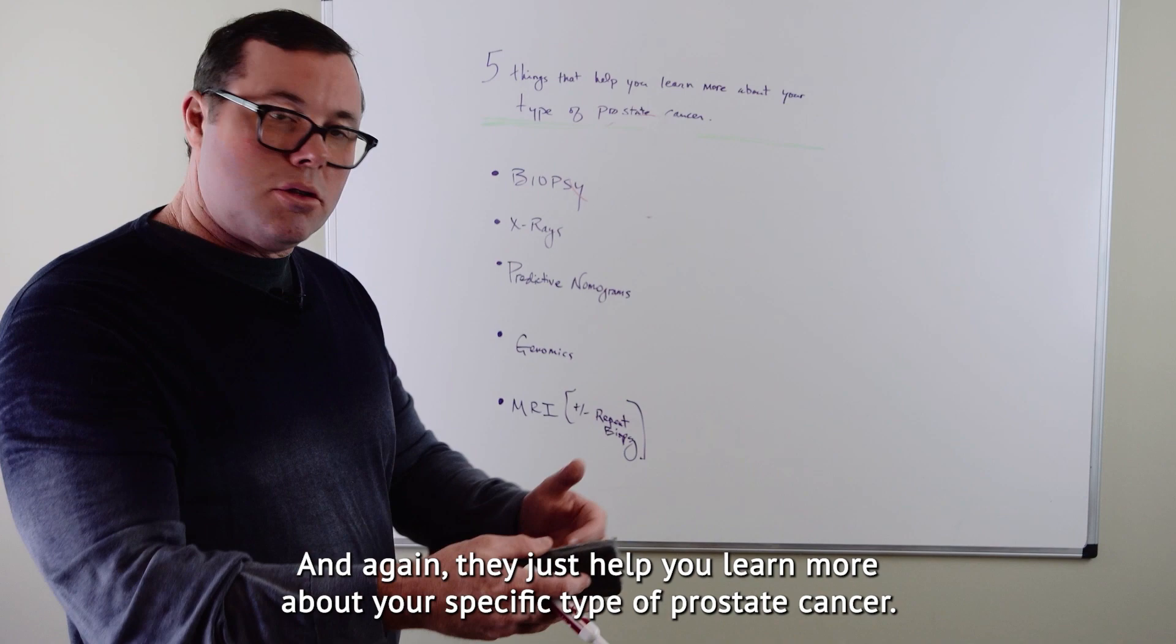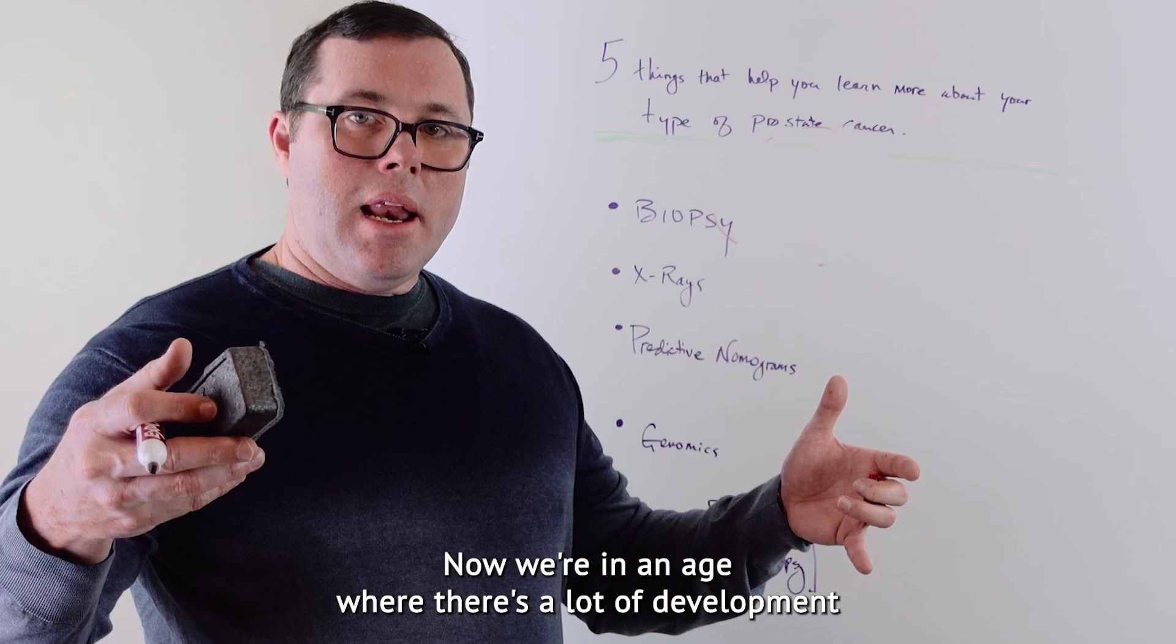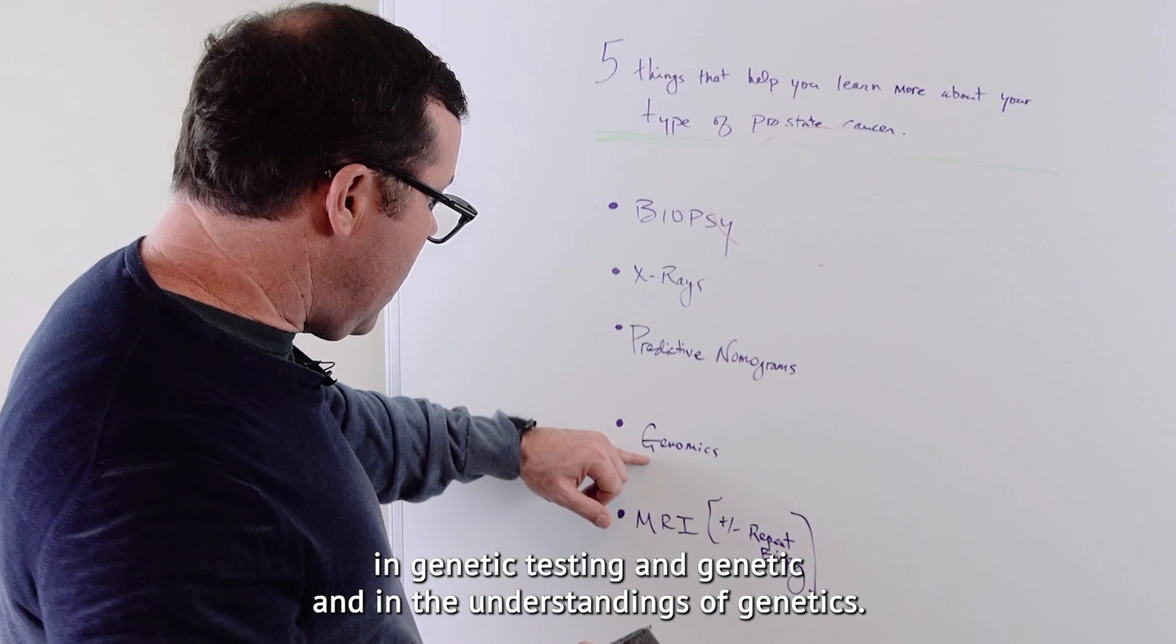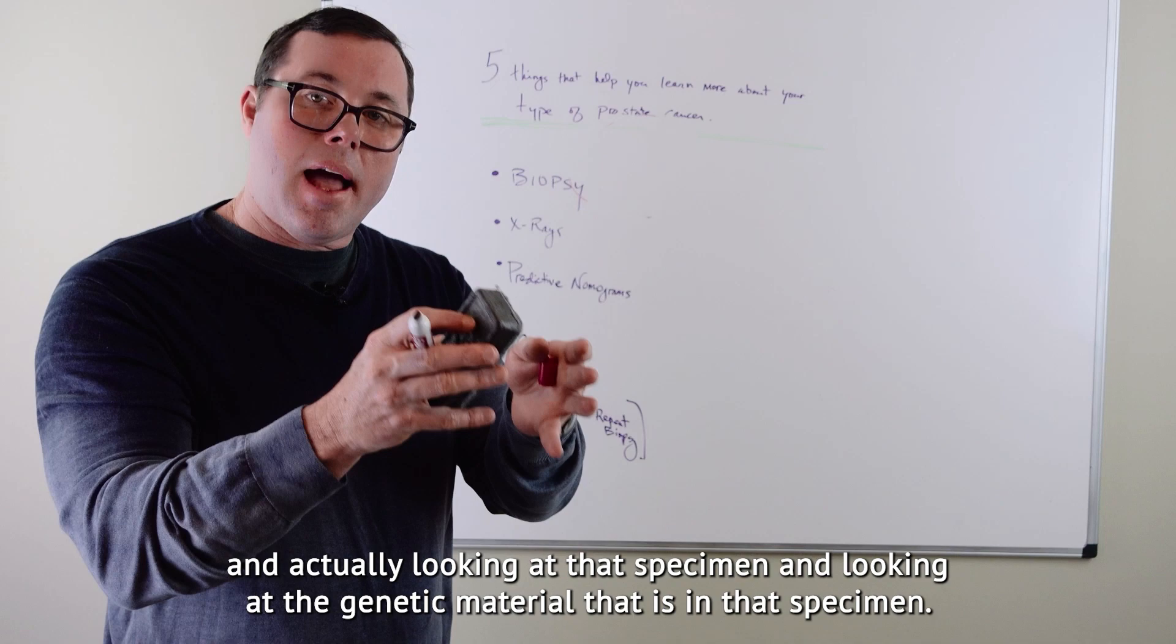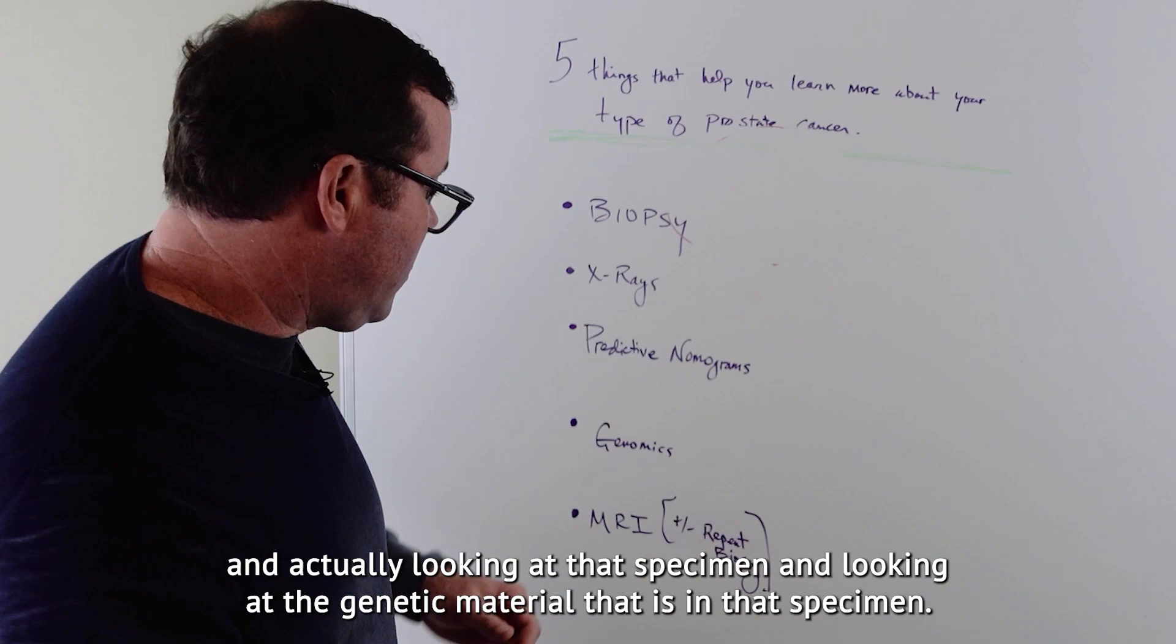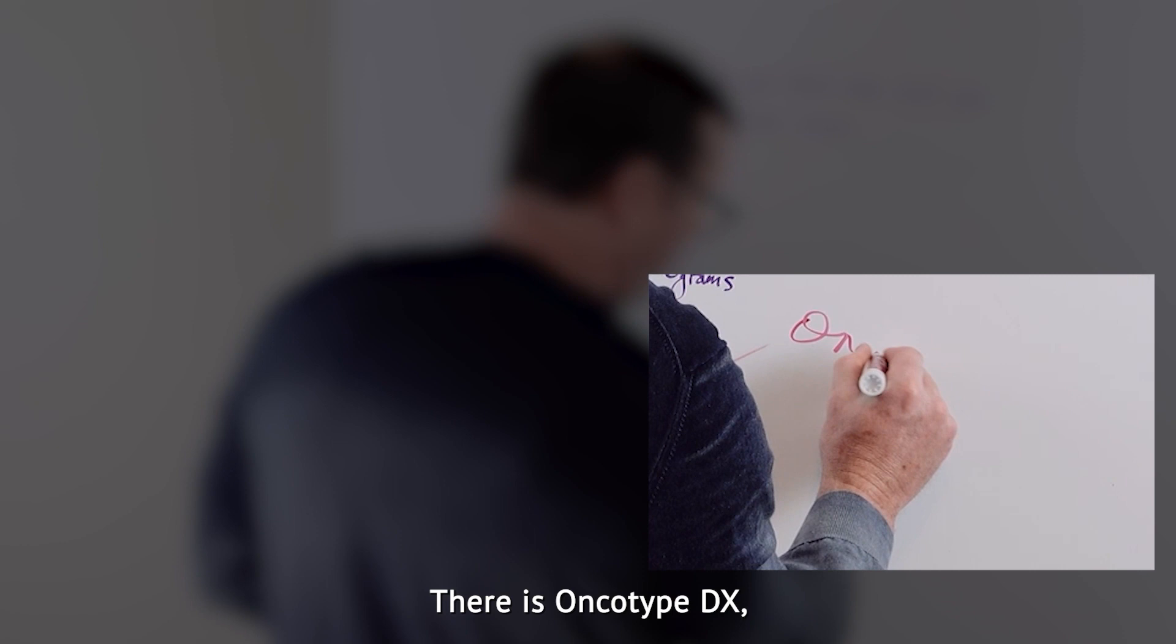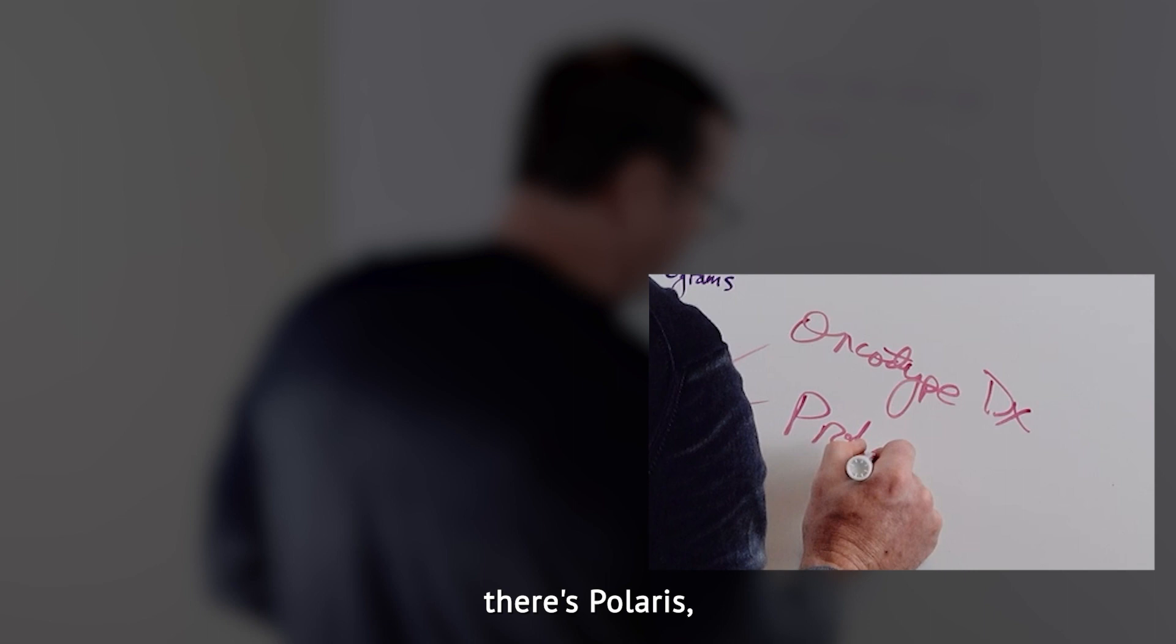The next thing is genomics. Now, we're in an age where there's a lot of development in genetic testing and in the understandings of genetics. Now, genomics is taking the prostate tissue that was sent on biopsy or from your PATH specimen and actually looking at that specimen and looking at the genetic material that is in that specimen. There's numerous genetic tests that can be used. There is Oncotype DX, there's Prolaris, and there is Decipher.